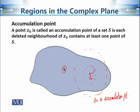Now let's choose a point P outside the set S. Is P an accumulation point? The condition requires every deleted neighborhood to contain at least one point of S. If we choose a neighborhood small enough that it lies entirely outside S, that deleted neighborhood contains no element of S. So the condition is not satisfied, and P is not an accumulation point.